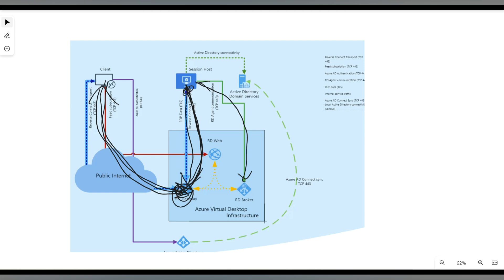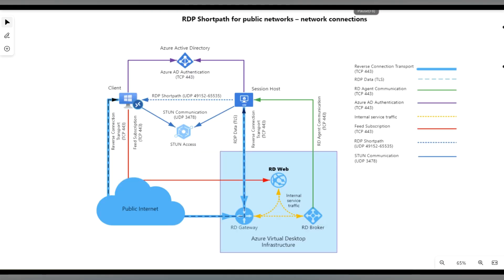This is how AVD works by default using reverse connect — because it does not make any inbound connection. It is purely an outbound connection from the session host to the remote gateway, and then using the established connection it connects back to the client.